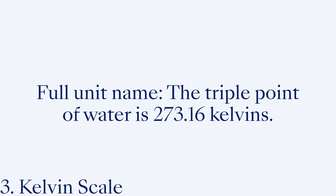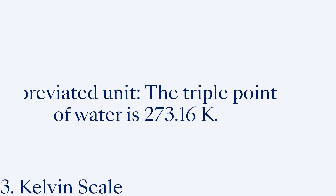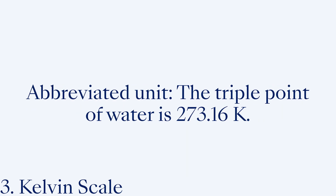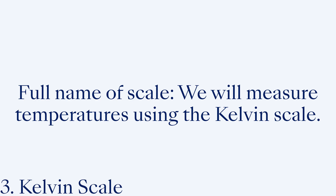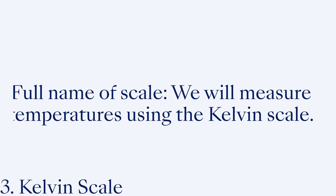One tricky thing to keep an eye on in Kelvins is capitalization. If you're writing out the full unit, no capital K is required. But if you're abbreviating the unit or referring to the name of the scale in full, use a capital K. For example: full unit — 'The triple point of water is 273.16 kelvins'; abbreviated unit — 'The triple point of water is 273.16 K'; and the full name of the scale — 'We will measure temperatures using the Kelvin scale.'